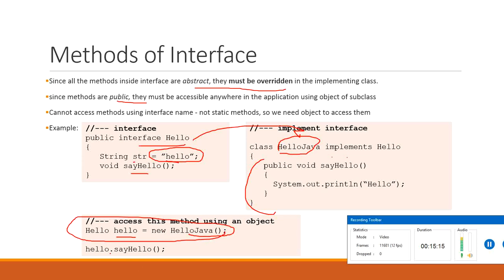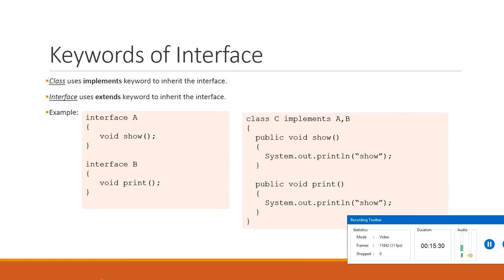Using the interface reference variable, we call the method sayHello — this demonstrates upcasting with interfaces. Importantly: a class uses the 'implements' keyword to inherit an interface, whereas an interface uses the 'extends' keyword to inherit another interface.